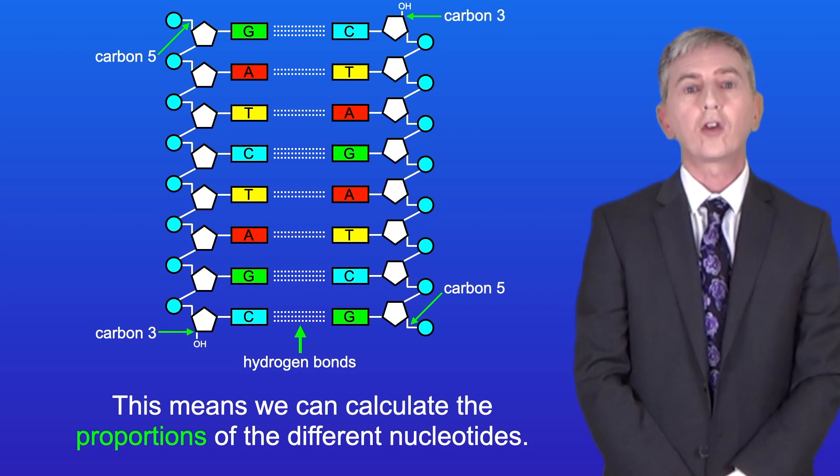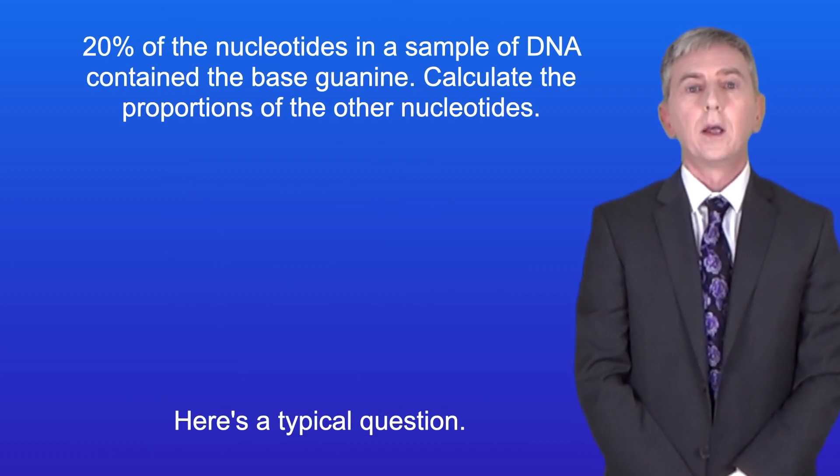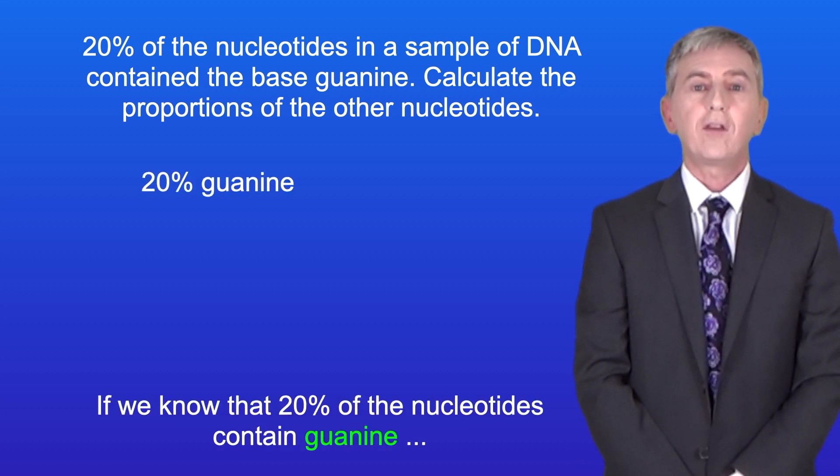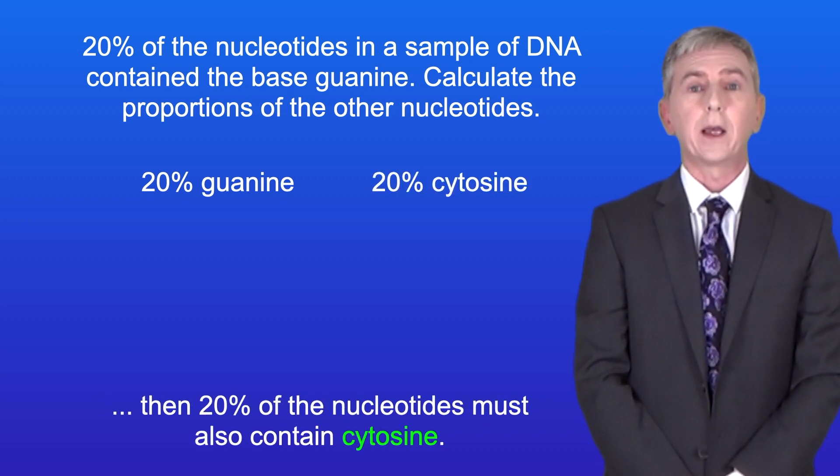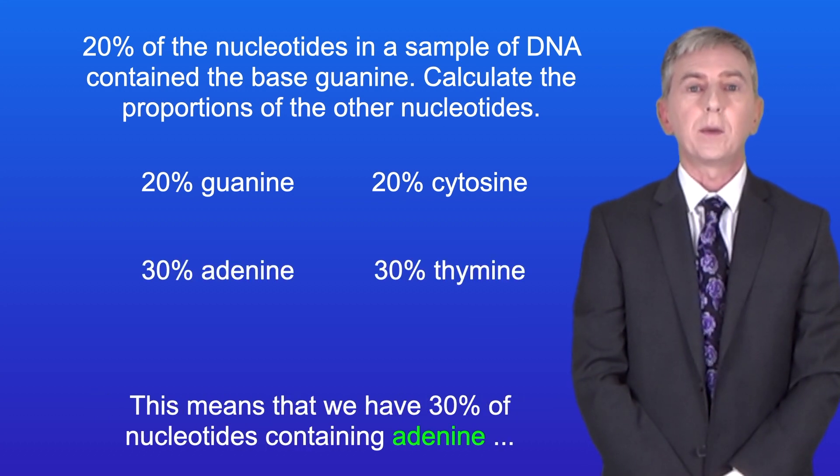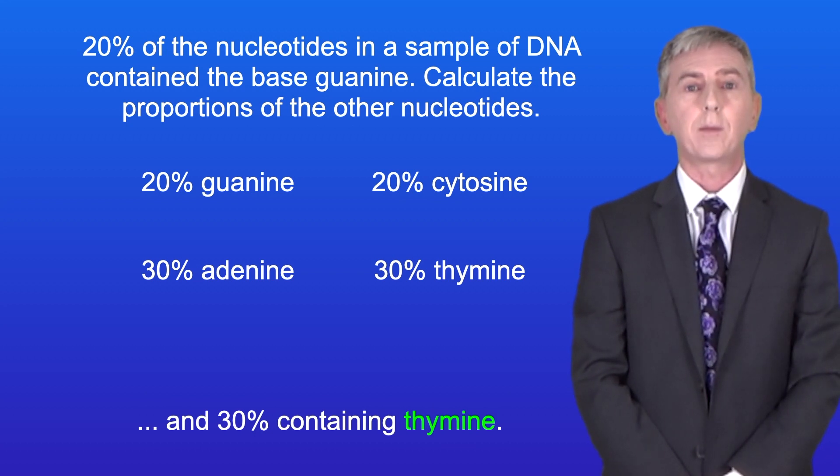This means that we can calculate the proportions of the different nucleotides. Here's a typical question. 20% of the nucleotides in a sample of DNA contain the base guanine. Calculate the proportions of the other nucleotides. Well if we know that 20% of the nucleotides contain guanine then 20% of the nucleotides must also contain cytosine. The remaining 60% of nucleotides must contain adenine and thymine. So this means that we've got 30% of nucleotides containing adenine and 30% containing thymine.